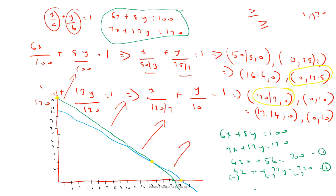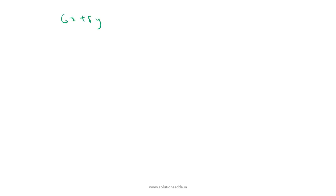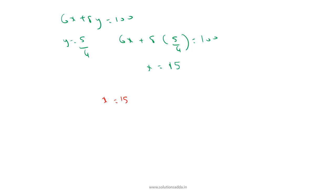With y = 5/4, substituting back into 6x + 8y = 100: 6x + 8(5/4) = 100, which gives 6x + 10 = 100, so x = 15. The intersection point of the two lines is (15, 5/4).